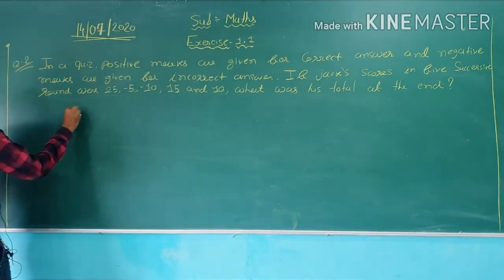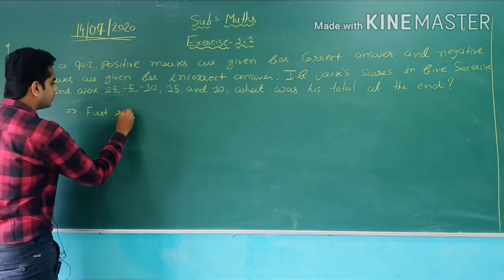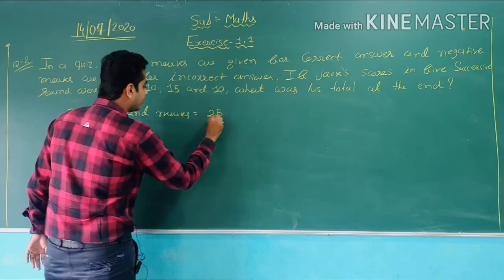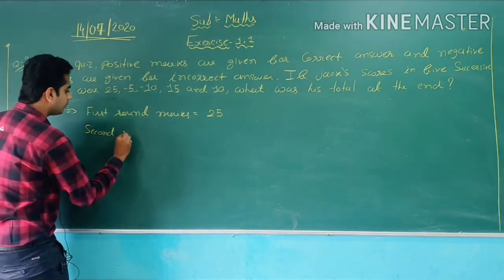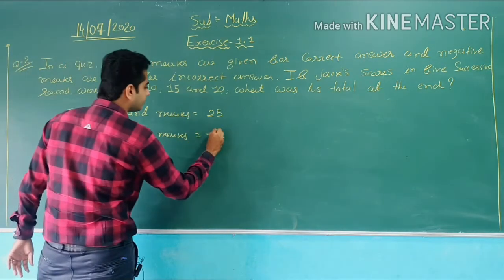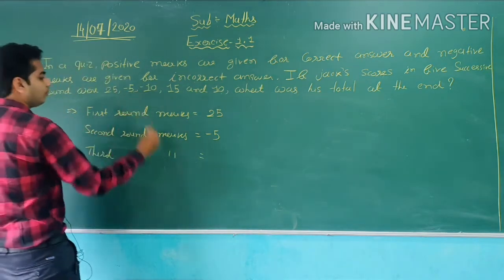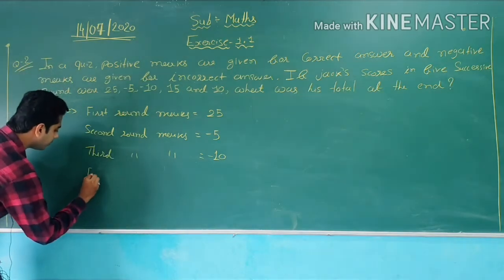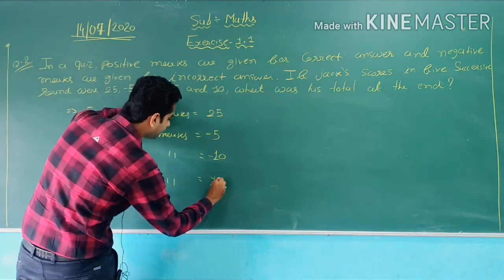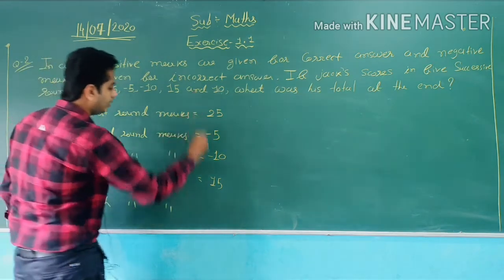First, what we will write? We will write according to round marks. First round marks is 25. Second round marks is minus 5. Third round marks is minus 10. Fourth round marks is 15. And the fifth round marks is plus 10.